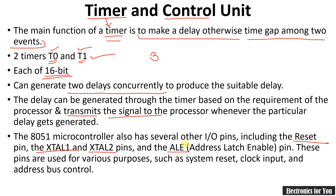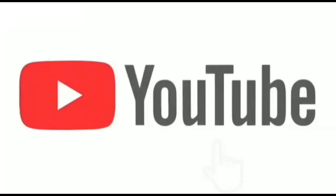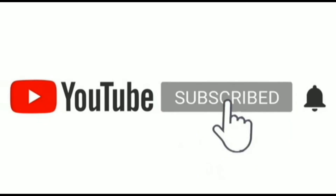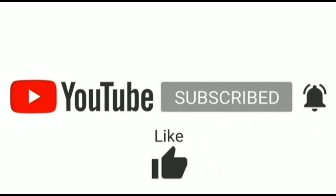Apart from timers, the timing and control unit also includes control signals such as the reset pin, XTL1 and XTL2 pins, and the address latch enable (ALE) pin, used for various functions. The reset pin resets the microcontroller; clock input is provided through XTL1 and XTL2; and address bus control is handled likewise. These will be covered in the next video on pin configuration for the 8051. If you like this video, please subscribe to the channel, press the bell icon, and like, comment, and share. Thank you.